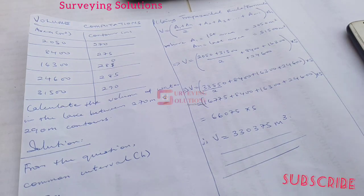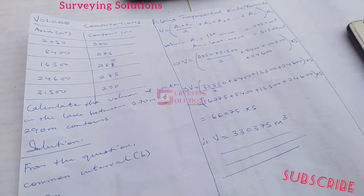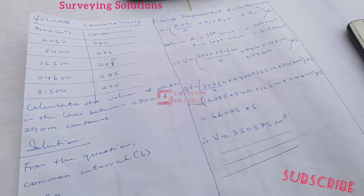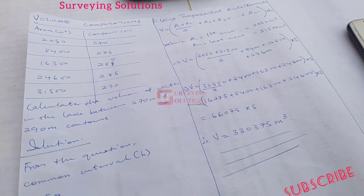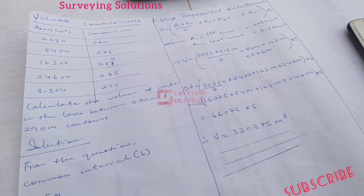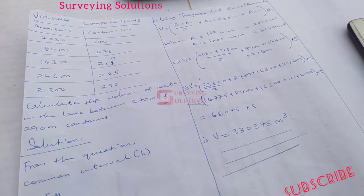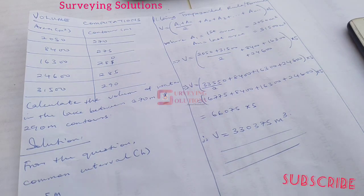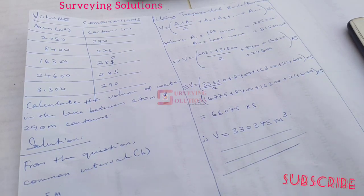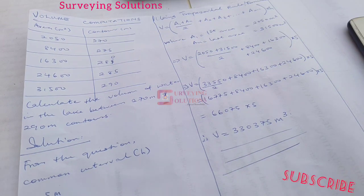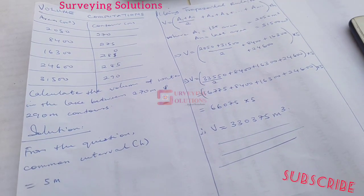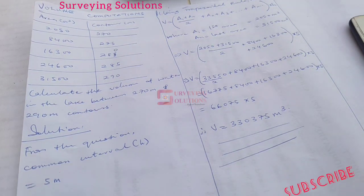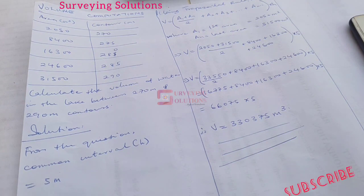We have the area of the different contour values at the different levels. So we have the area of the water at those different levels. We're having from 270 to 290 as the range of the contours. Now the different areas were also given to us and they said we should calculate the volume of the water in the lake between 270 meters and 290 meters. The 270 and the 290 is actually the difference between the top and the bottom of the contour.